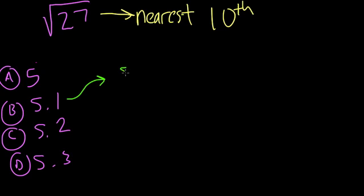Let's start with 5.1 squared, right? Because if that is the nearest square root of 27, it should be 5.1 squared, at least, should be pretty close to 27. Let's try it out.